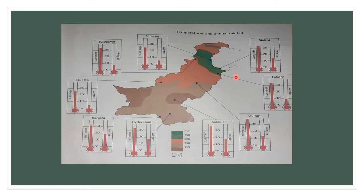The map shows that in Sialkot, Lahore, and Murree, the annual rainfall was about 750 millimeters. The key uses colors to indicate how much rainfall occurs annually in a certain area. Whereas in Quetta and in Peshawar, it rained about 500 millimeters a year annually.